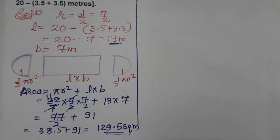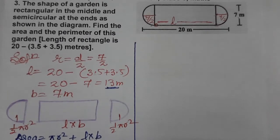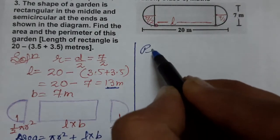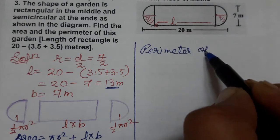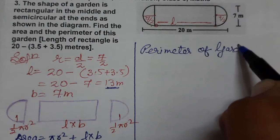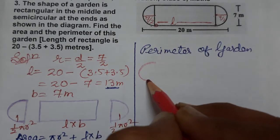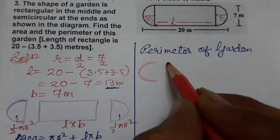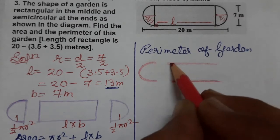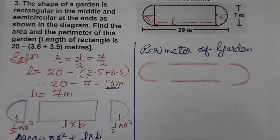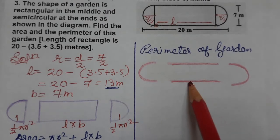Now we need to find the perimeter. Perimeter of the garden means the outer boundary. Looking at the figure, the outer boundary consists of one semicircle, then two lengths, then one more semicircle. So perimeter equals pi r plus l plus l plus pi r.